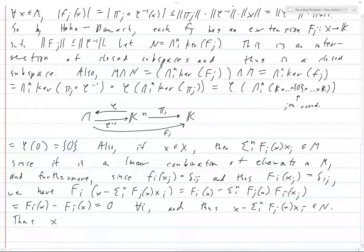Thus x is in M + N. Because you write it as x minus this, which is in N, and then you plus this, which is in M. So hence, X equals M + N.